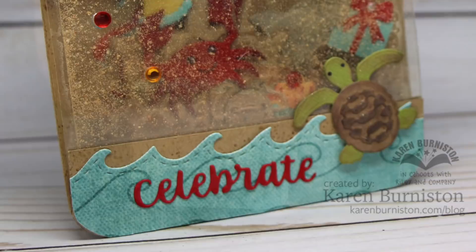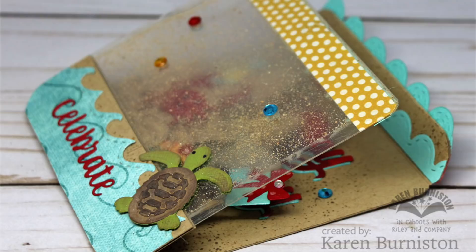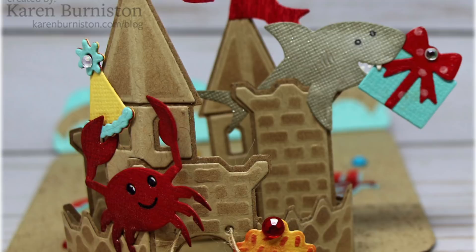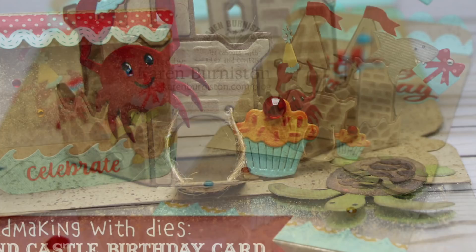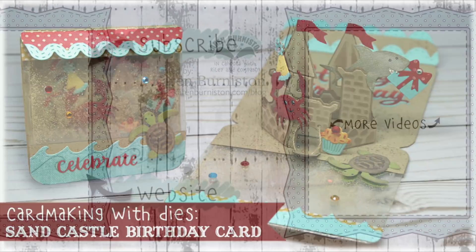With these monthly designer challenge videos, I really invite you just to look at the techniques involved and adapt these cards to other themes. You can see this would be a great castle card using more traditional castle colors, maybe with the knight, dragon, and princess. You don't have to put sand in your window—you could use confetti, sequins, beads, or just make it a plain clear window. Really have fun with it. If you click on the website link, you'll go to KarenBurniston.com where you can find information about purchasing these dies as well as links to all my other social media accounts. You can subscribe to this YouTube channel and check out some of my other videos. Thanks so much for watching, and I'll see you next time.